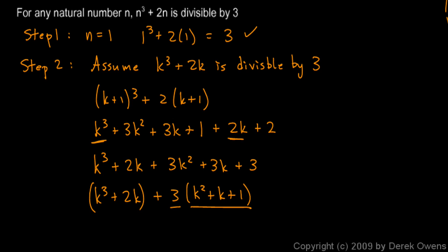3 times something is always divisible by 3. So I have one number that's divisible by 3 plus another number that's divisible by 3. So this has to be divisible by 3.